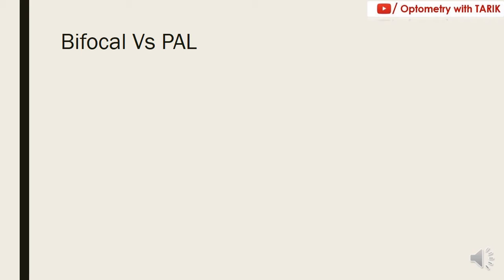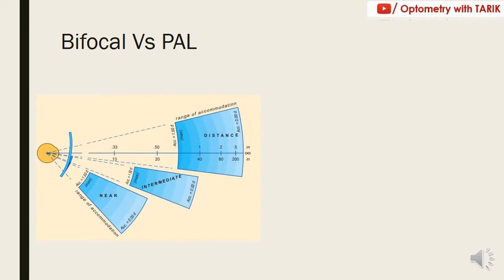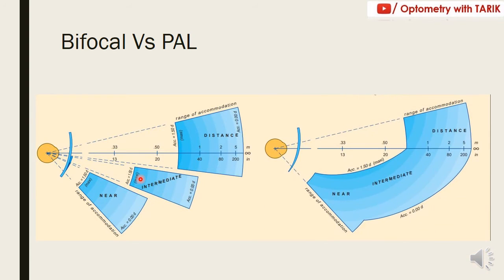Bifocal versus progressive addition lenses: in a bifocal lens you get distance and near vision, while in a trifocal you get distance, intermediate, and near. But every time you shift your gaze from one portion to another, there is a sudden change in magnification giving a jump effect, which is uncomfortable and annoying. There is no continuous single point of vision and no complete range of vision. In progressive addition lenses, because power increases gradually after the distance optical center, there is a continuous point of single vision that doesn't break, and there is no sudden image jump — giving better image quality and a single perception of space.